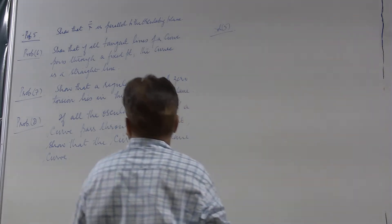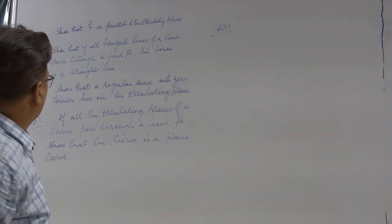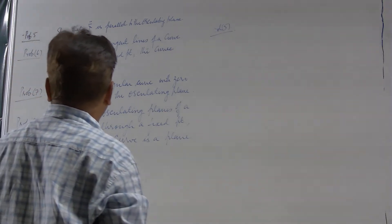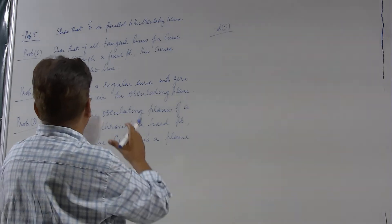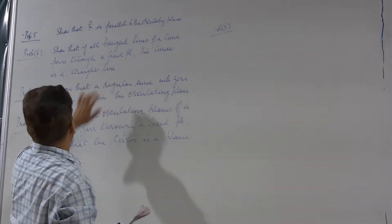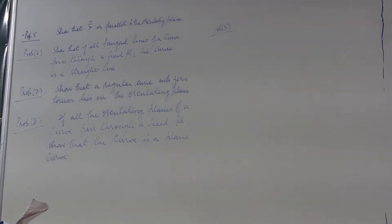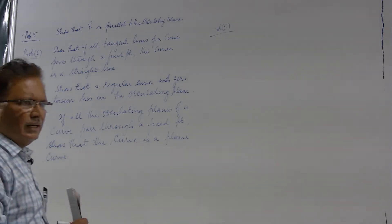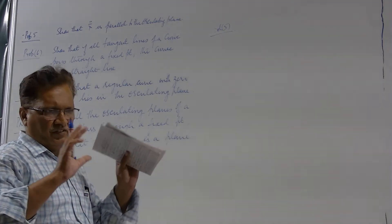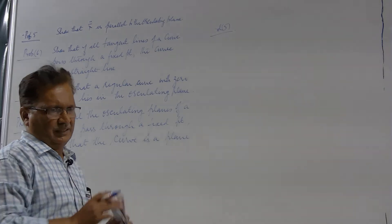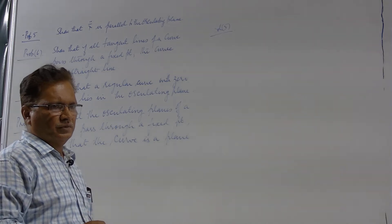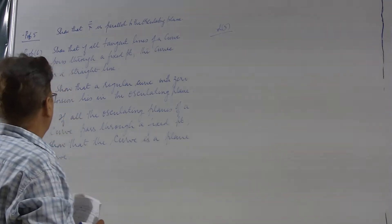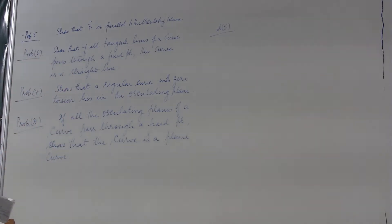I would like you to solve some problems by yourself. I will leave question number 6 for you to try. You can see what is being said in problem number 6: if there is a curve such that all the tangent lines pass through a fixed point, this cannot happen unless the curve is a straight line. This you can easily visualize; the only thing is you have to prove it. You better try.